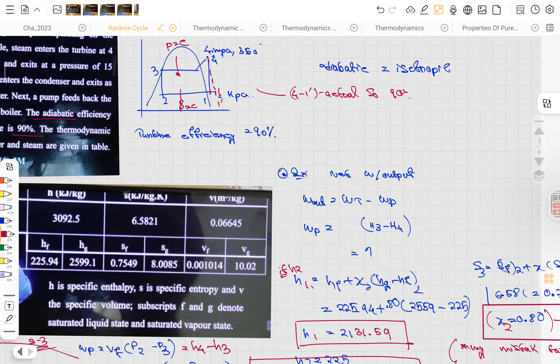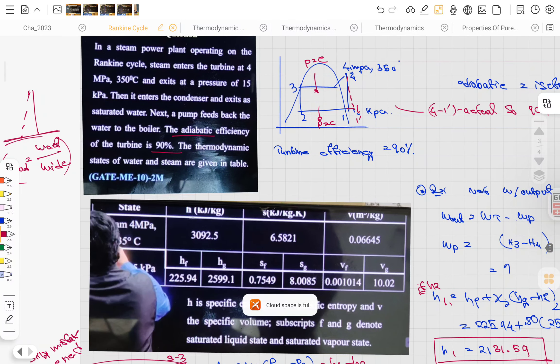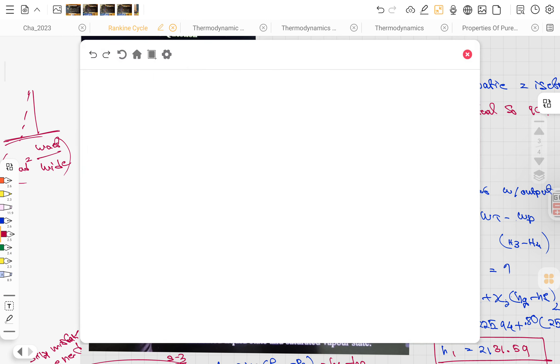You need to calculate the h2 point. For h2, what's written is 'condenser exit at saturated water.' Saturated water - that doesn't mean dryness fraction is one. You need to see what is saturated water.